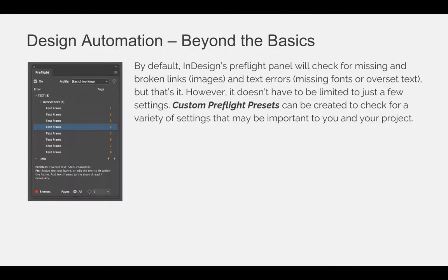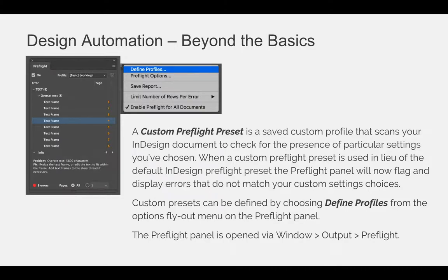However, it doesn't have to be limited to just a few settings. Custom preflight presets can be created to check for a variety of settings that may be important to you and your project. A custom preflight preset is a saved custom profile that scans your InDesign document to check for the presence of particular settings you've chosen. When a custom preflight preset is used in lieu of a default InDesign preset, the preflight panel will flag and display errors that do not match your custom setting choices. Custom presets can be defined by choosing defined profiles from the options flyout menu on the preflight panel, which you can open via the Window menu, Output, and then choose Preflight.